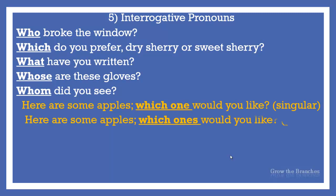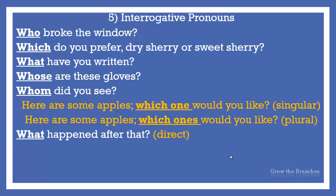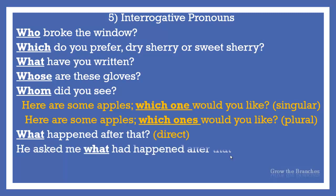Consider the following examples. Here are some apples — which one would you like? Or: which ones would you like? In the previous examples, which is an interrogative adjective — it is followed by one. Note also that the interrogative can introduce a direct question or an indirect question. For example: What happened after that? — direct question. He asked me what had happened after that — an indirect question.